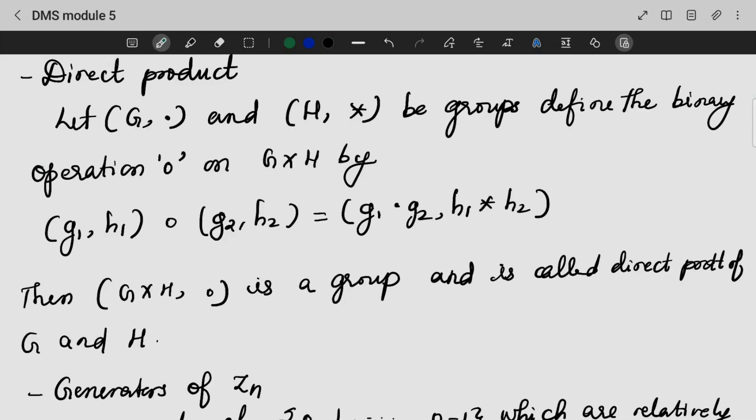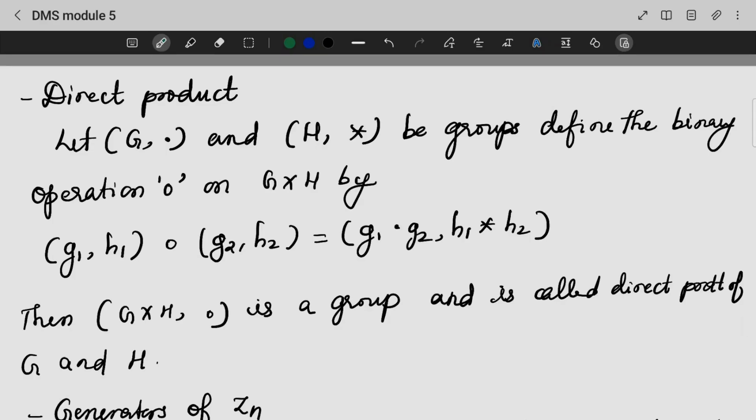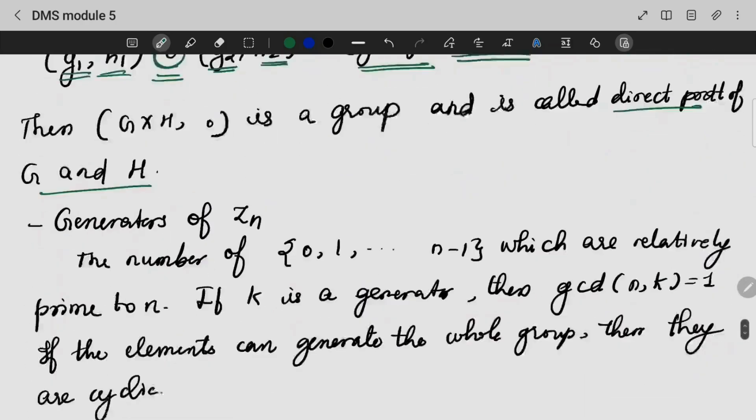Now let's look at the direct product. Here we are defining two groups, G and H. If these two groups are defined by a binary operation on elements of G and H, this binary operation will follow their own operations respectively. Hence, this is called a direct product of G and H. G cross H with this binary operation will be a group.